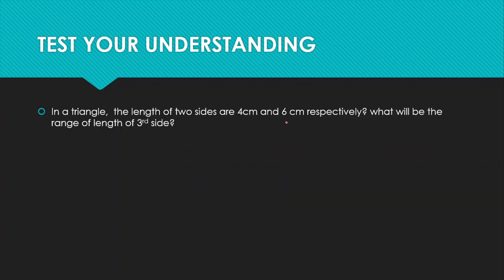Another problem: In a triangle, the lengths of two sides are 4 cm and 6 cm. What is the range of the third side? We know the third side is always smaller than the sum of the other two sides, so the third side — let's call it C — is smaller than 4 plus 6, which is 10 cm. It is also greater than the absolute difference of the two lengths.